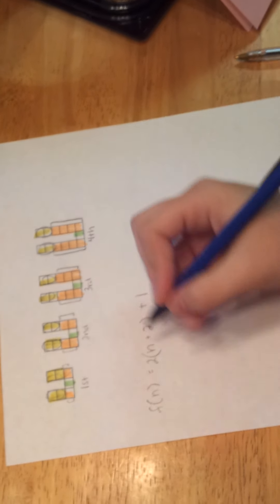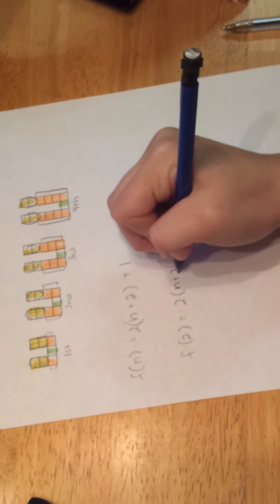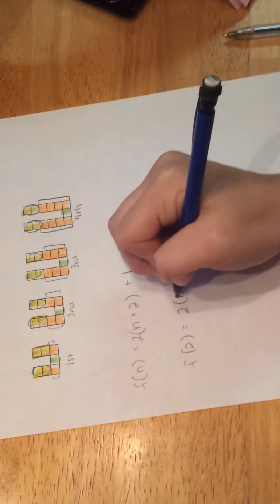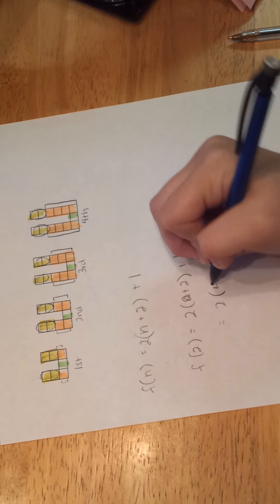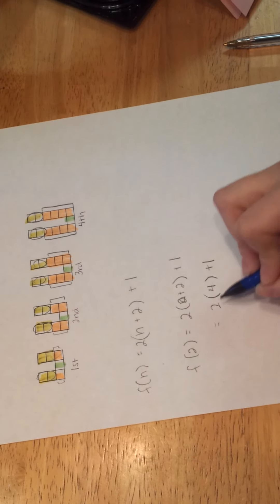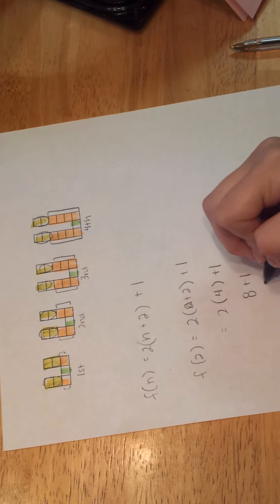So for example, we can do f of 2 equals 2, n plus 2. This should be a 2. Plus 1. So 2 plus 2 is 4. Plus 1. 2 times 4 is 8. Plus 1. And that equals 9.